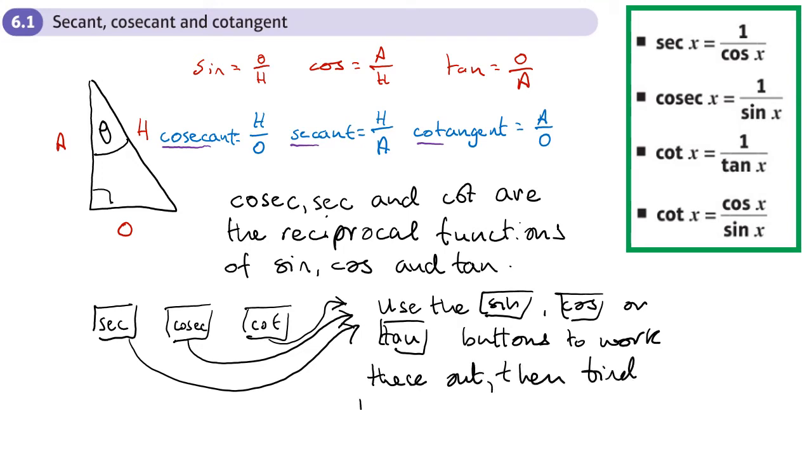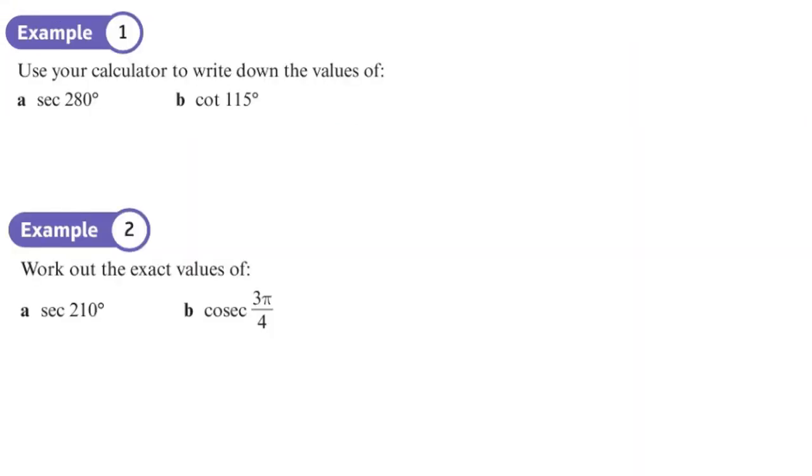Then find the reciprocal, and there is a button you can use, this is one over x, or it might say x to the minus one. So you can just press that button and it will give you the solution. So let's try some. First one, sec 280° part a. So what I actually have to do is work out one over, and reciprocal of sec is cos, cos 280. So this tells me I'm doing degrees. And for part b, if I'm going to do that, I need to do one over tan 115.